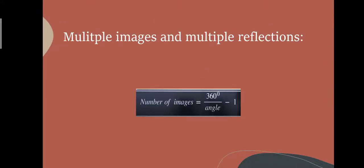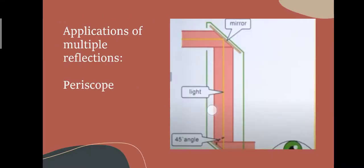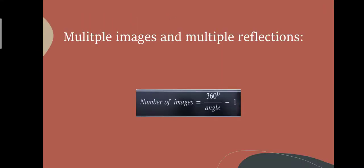When all mirrors are parallel to each other, the angle is zero degrees, and the maximum number of images is formed. The formula for the number of images is: number of images = (360° ÷ angle) − 1.